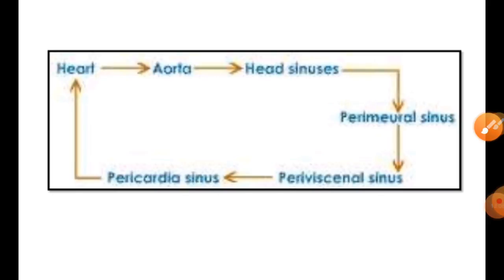Blood is pushed into the anterior aorta and lateral arteries. From the aorta, blood passes into the head sinus and into the previsceral and perineural sinuses. The circulatory pathway is: heart → aorta → head sinus → pulmonary sinus → previsceral sinus → pericardial sinus.